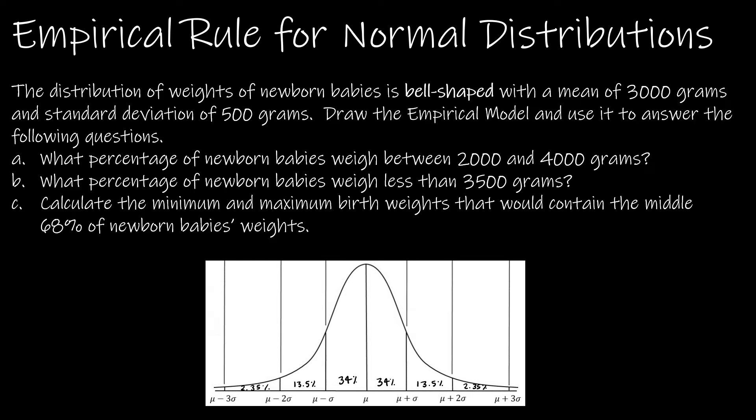Okay, so really when it says draw the empirical model, it means draw this curve, and instead of mu, put 3000. And instead of mu plus sigma, add the standard deviation of 500 grams. So 3000 plus 500 is 3500. Another 500 onto that gives me 4000 and 4500.